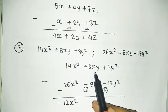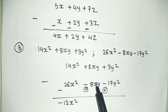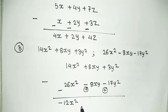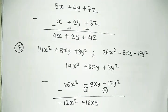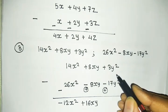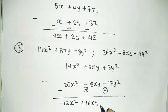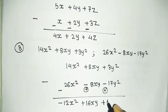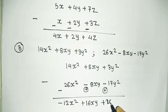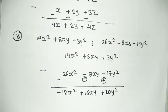Next: plus 8xy and plus 8xy — plus plus gives addition, so 8 plus 8 equals 16xy. Then plus 17y² and plus 3y² — plus plus, so 17 plus 3 equals 20y². The final answer is minus 12x² plus 16xy plus 20y².